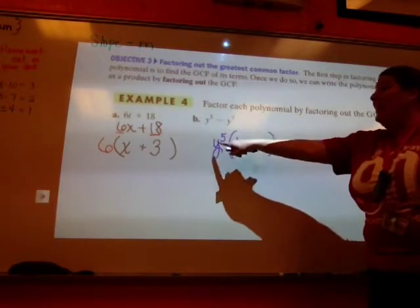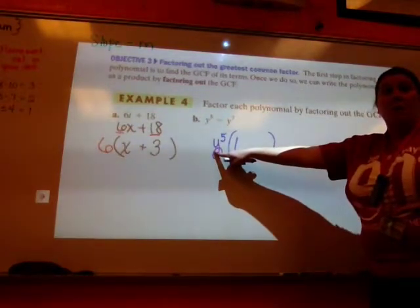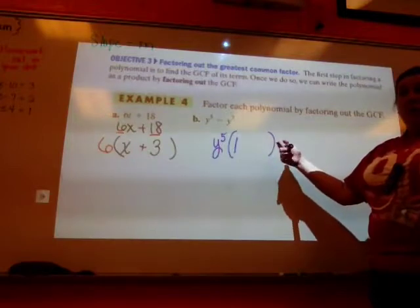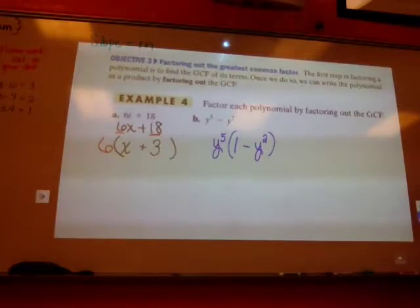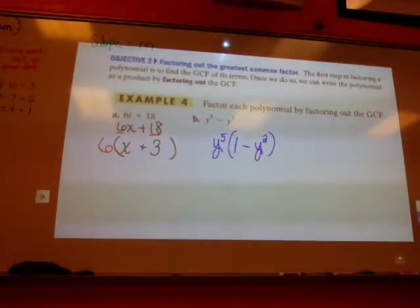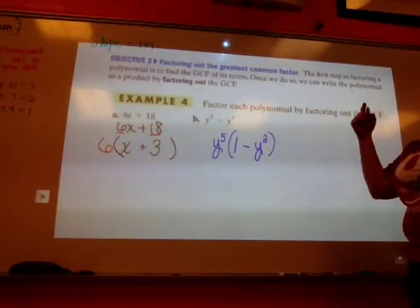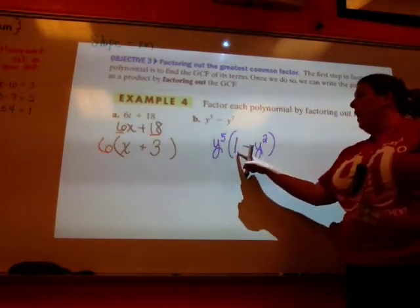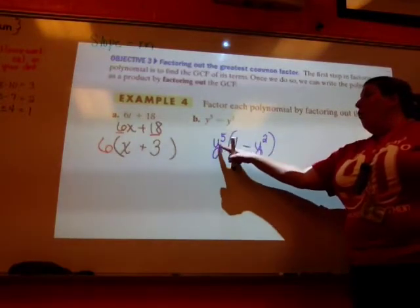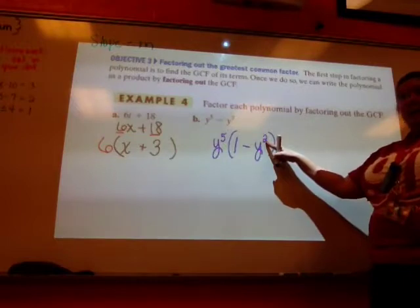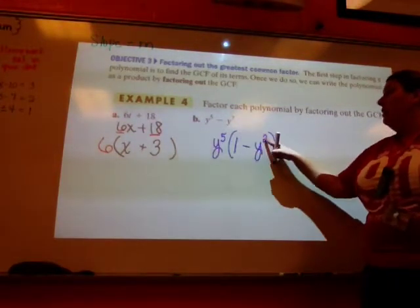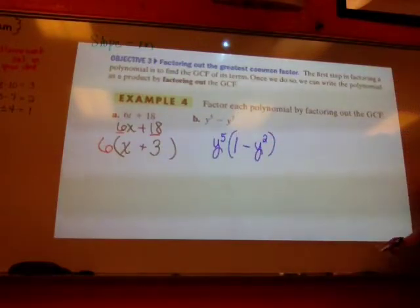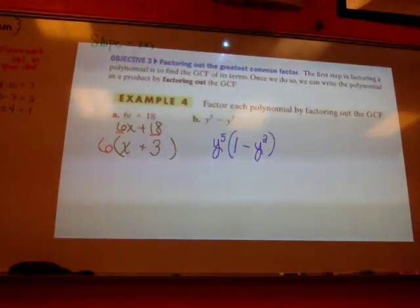But now that I've got 7 of them, I take 5 of them, what am I left with? A minus y to the 2nd, because there's only 2 of them there. Does that make sense? So now when I get ready to distribute, I'm self-checking. So I go y to the 5th times 1 is y to the 5th. Y to the 5th times y to the 2nd. Remember when I multiply exponents, I'm really what? Adding. So 5 and 2 get me 7. Does that make sense?